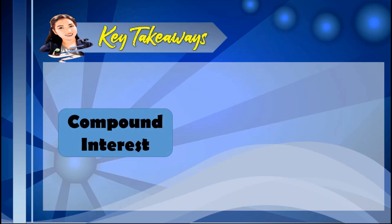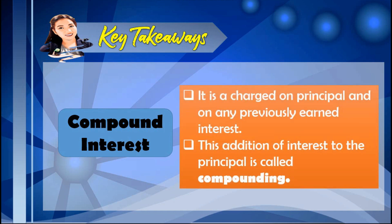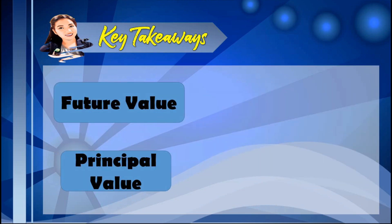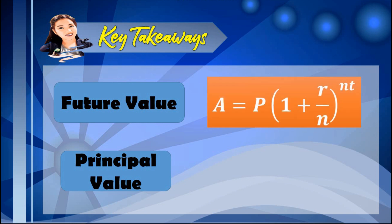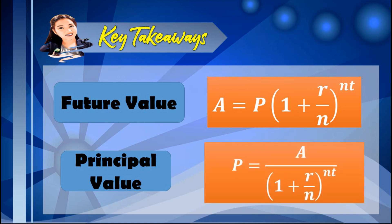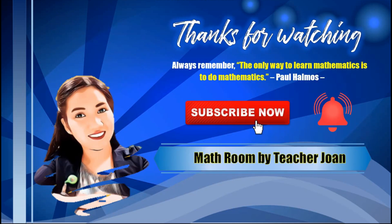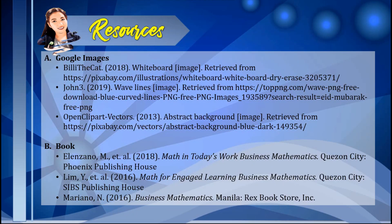Here are the important things to remember: compound interest is a charge on principal and on any previously earned interest, and this addition of interest to the principal is called compounding. To solve for the future value, use A = P × (1 + R/N)^(N×T). To find the principal value, use P = A ÷ (1 + R/N)^(N×T). This is the end of our discussion about compound interest. I hope you learned a lot — thanks for watching, please like and comment, and see you in the next video!